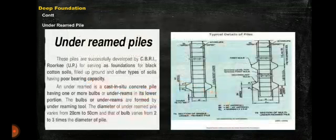Next is under reamed pile. These piles were developed by CBRI Roorkee in UP to serve as foundation for black cotton soil, filled up ground and other types of soils having poor bearing capacity. The under reamed is a cast in situ concrete pile having one or more bulbs or under reams in its lower portion. The bulbs or under reams are formed by under reaming tool. The diameter of under reamed pile varies from 20 to 50 centimeter and that of bulb varies from 2 to 3 times the diameter of pile.